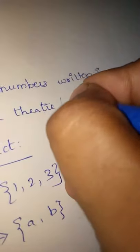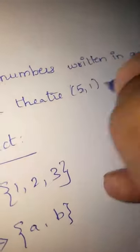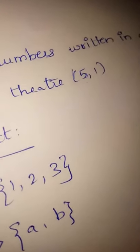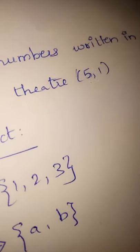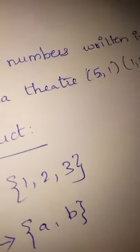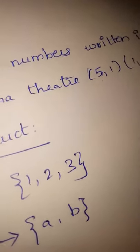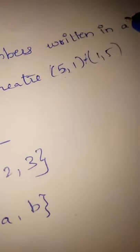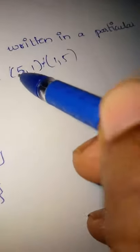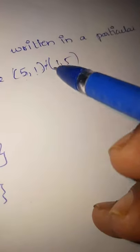For example, cinema seat number: 5,1 means 5th row, 1st seat. 1,5 means 1st row, 5th seat — a different order. So a pair of numbers written in a particular order is called an ordered pair. This is the cinema example.